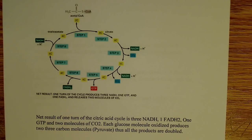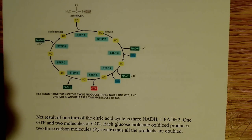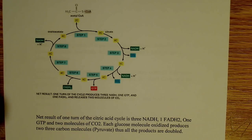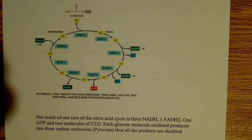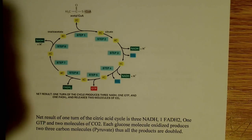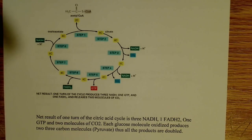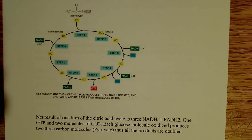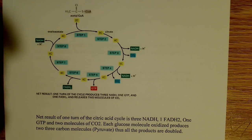In step four, we have another oxidative decarboxylation, which means NAD+ is being reduced to NADH, and alpha-ketoglutarate is being oxidized to what's known as succinyl-CoA. There is a coenzyme A molecule that's going to be attached. The alpha-ketoglutarate is a five-carbon molecule — it makes sense because in the last step we lost CO2. Now, going through another oxidative decarboxylation, we lose a CO2 molecule from alpha-ketoglutarate, giving us a four-carbon molecule, succinyl-CoA, and we also produce NADH, H+, and CO2.